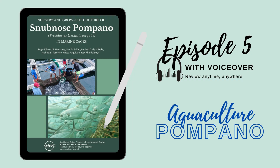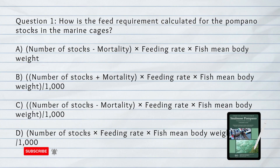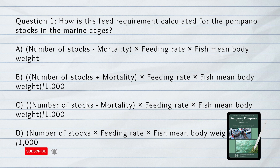Number 1. How is the feed requirement calculated for the pompano stocks in the marine cages? A. Number of stocks minus mortality times feeding rate times fish mean body weight. B. Number of stocks plus mortality times feeding rate times fish mean body weight, divided by 1,000. C. Number of stocks minus mortality times feeding rate times fish mean body weight, divided by 1,000. D. Number of stocks times feeding rate times fish mean body weight, divided by 1,000.